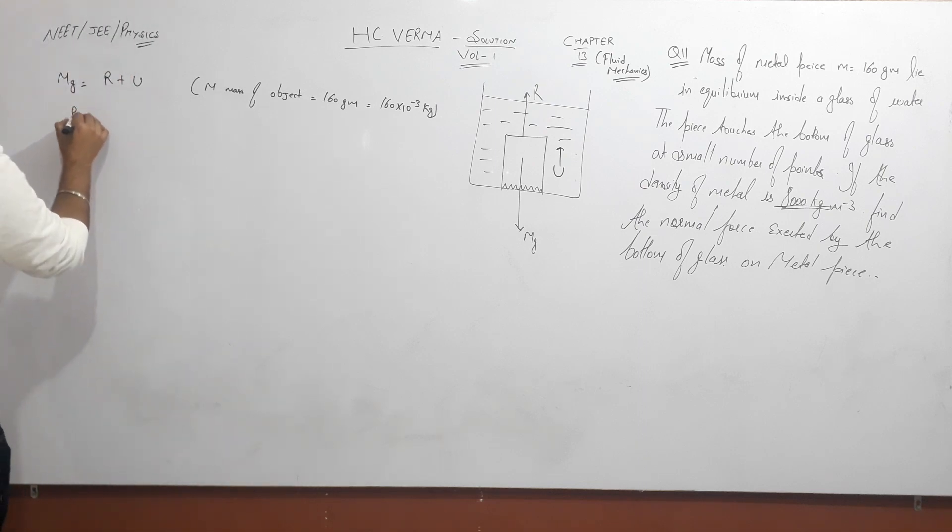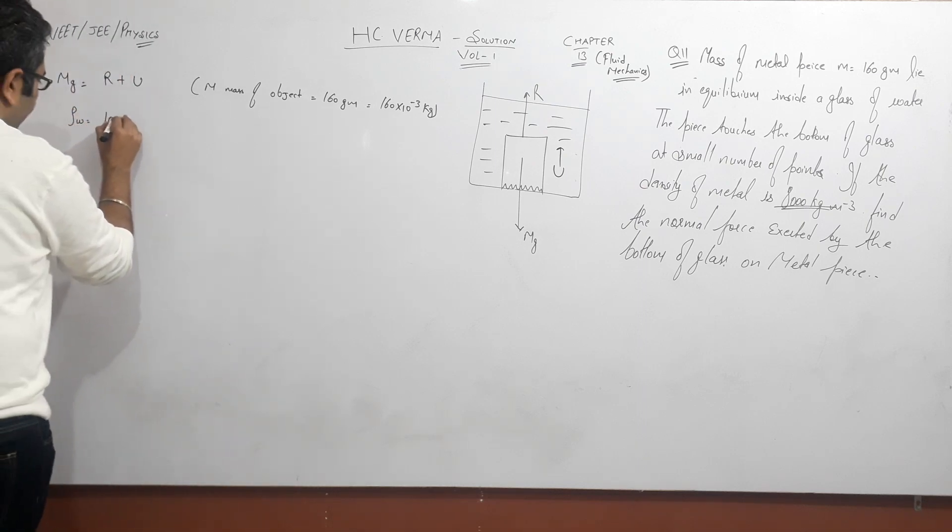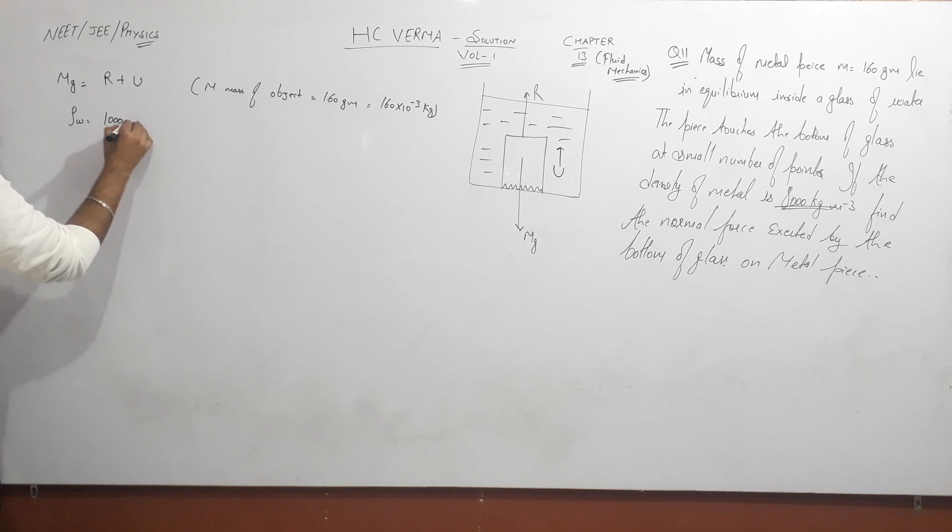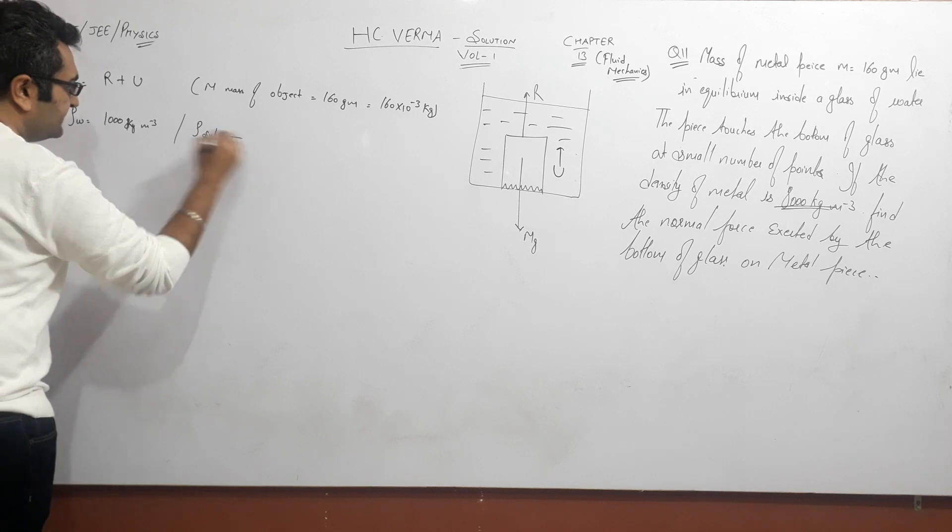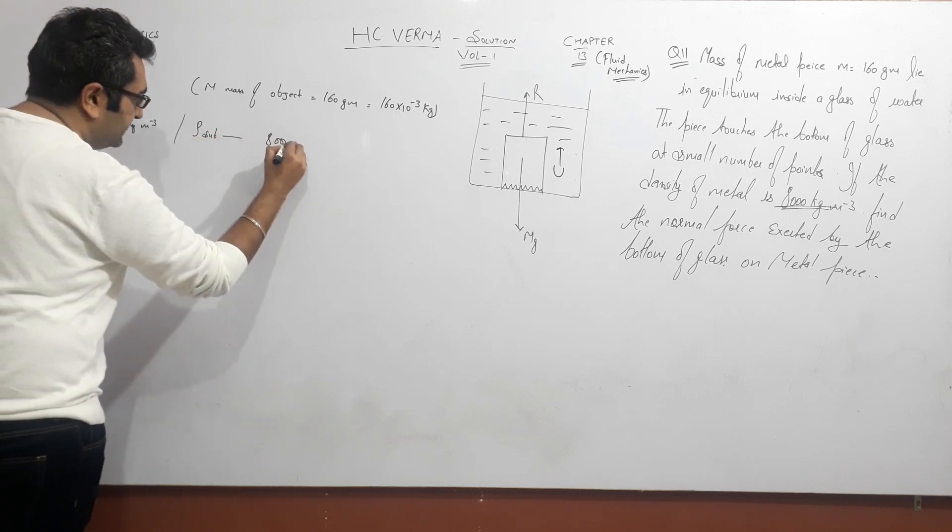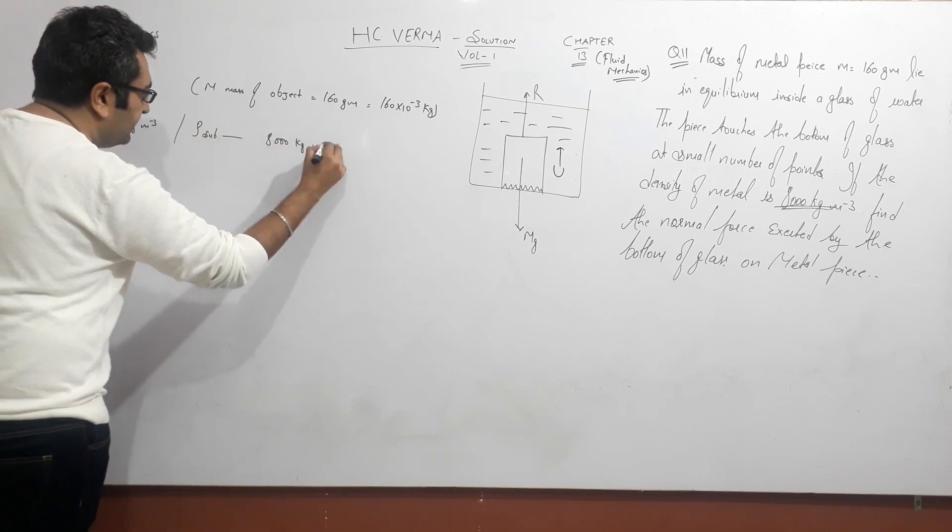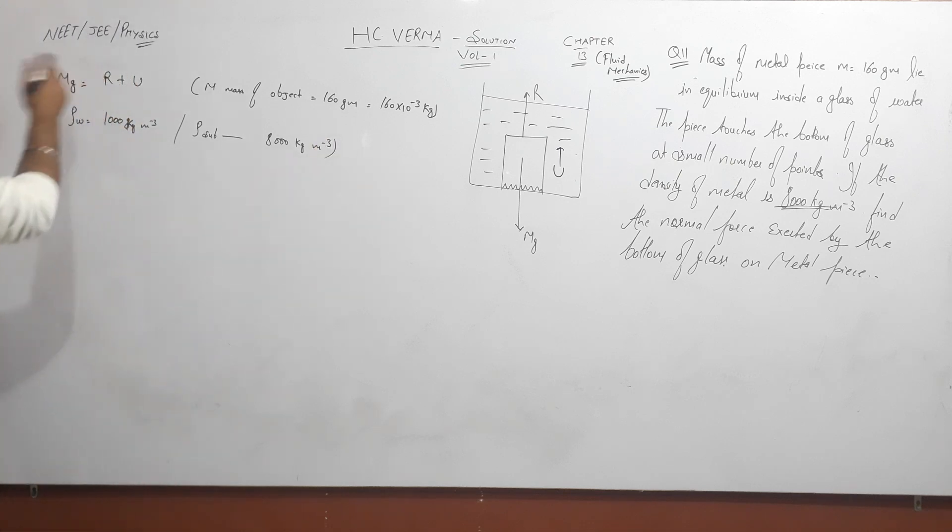After that, density of water is how much? 10 to the power 3 or 1000 kg per meter cube. And density of the substance, this one, is how much? 8000 kg per meter cube. This is the information from the question, and now we need to put values in.